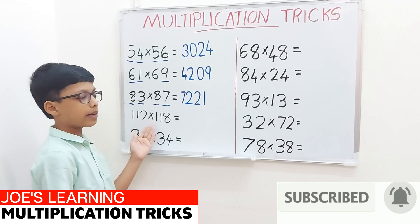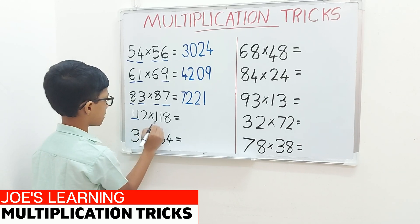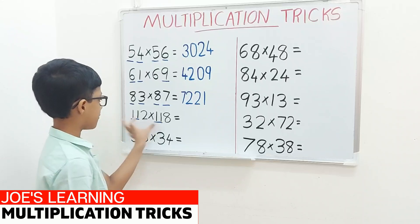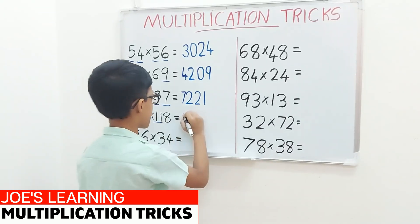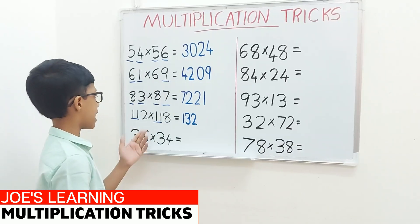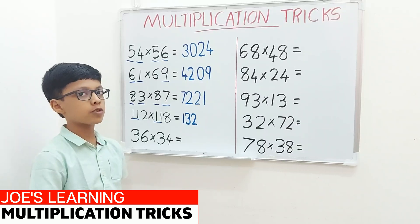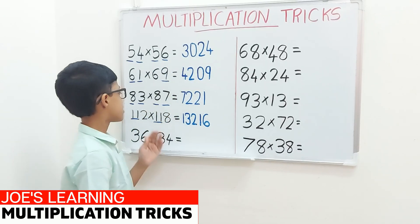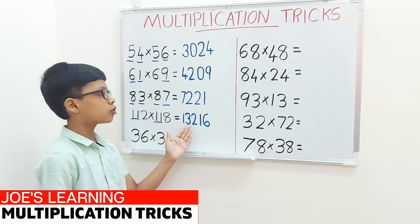Now let's move on to the example 112 multiplied by 118. First we have to look at the digits in the tens place, but in this case the tens and hundreds places are also there, so we count them as one number, 11. Now we should multiply 11 with its next number 12. 11 multiplied by 12 equals 132. Now multiply the digits in the units place, 2 and 8. 2 multiplied by 8 equals 16. Write it down as the next two digits of our product. So 112 multiplied by 118 equals 13260.